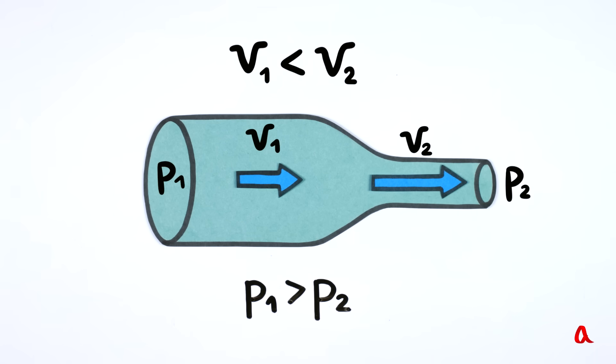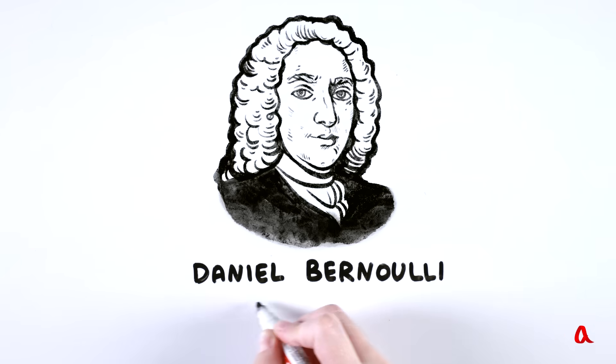Therefore, when the pipe gets narrower, the pressure in it will not rise, as it may seem at first sight, but fall. This puzzling paradox is called Bernoulli's principle in honour of its discoverer, a Swiss physicist Daniel Bernoulli.